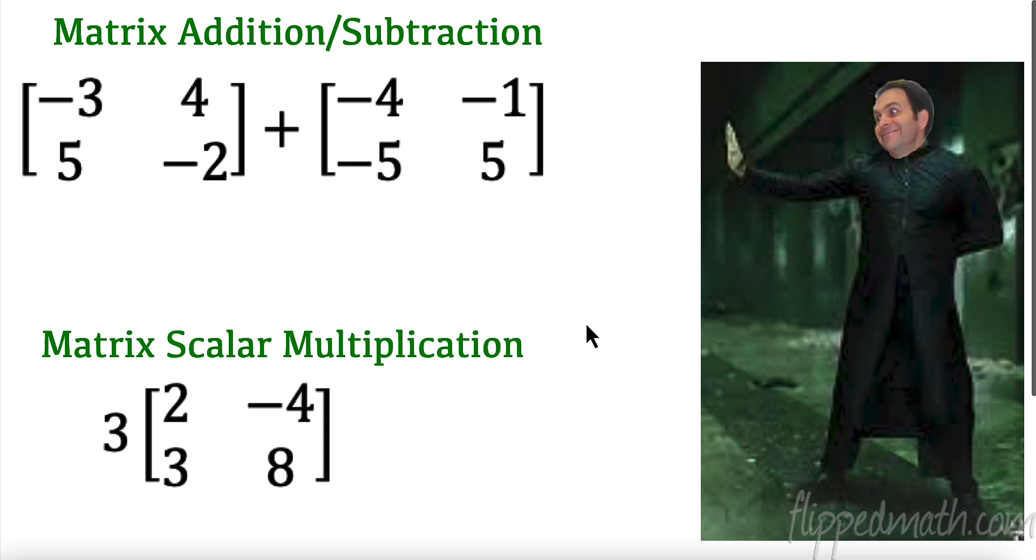Alright, so let's do some cool stuff with this stuff. First of all, can we do matrix addition and subtraction? Yes, we can. So you already heard me say this. We have to have exactly the same matrix dimensions. This is a 2 by 2. This is a 2 by 2. We can add these together and we could get negative 3. I'm going to add common components. So negative 3 and negative 4 is negative 7. 4 plus negative 1 is 3. 5 plus negative 5 is 0. Negative 2 plus 5 is 3. That would give us our answer to adding that.